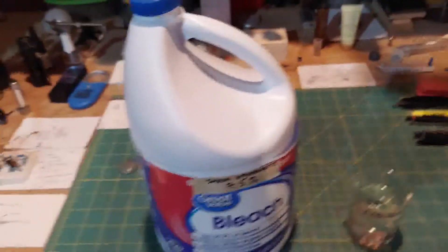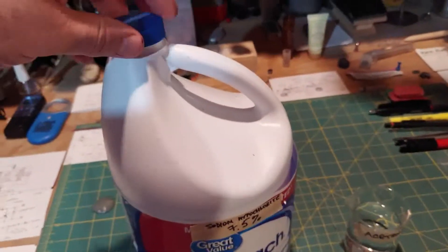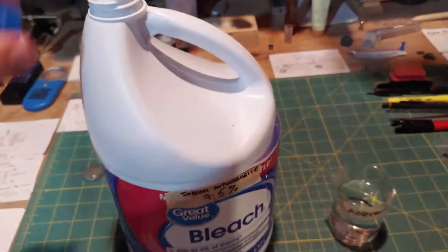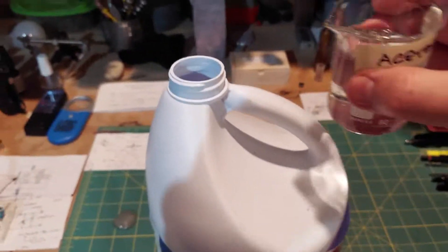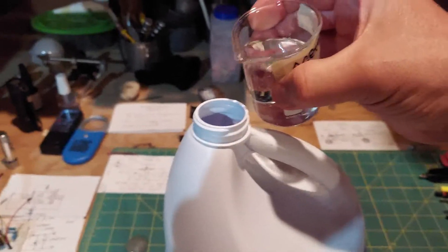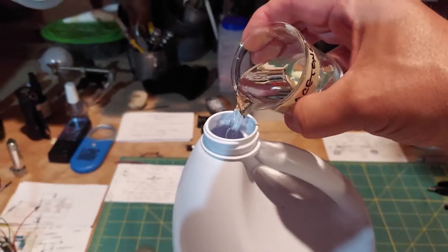So we're going to take our bleach right here. You have to remove a little bit of the bleach to start because you're going to add 100 milliliters of acetone to your bleach and it will start to react right away. So we're going to put that in there like that.